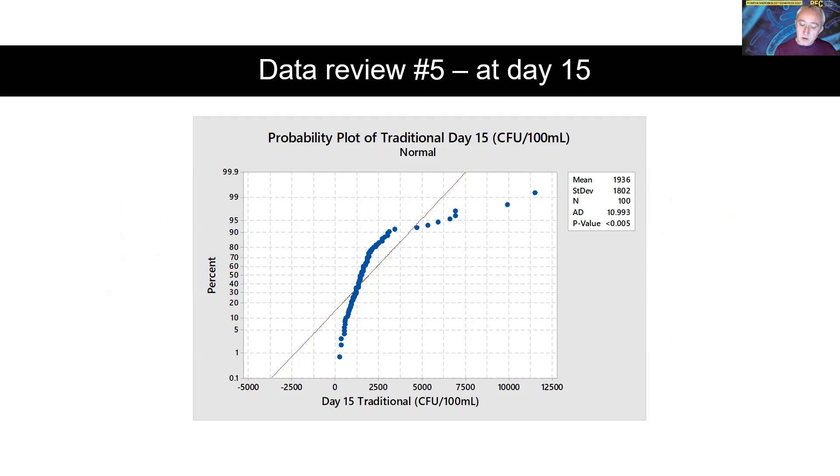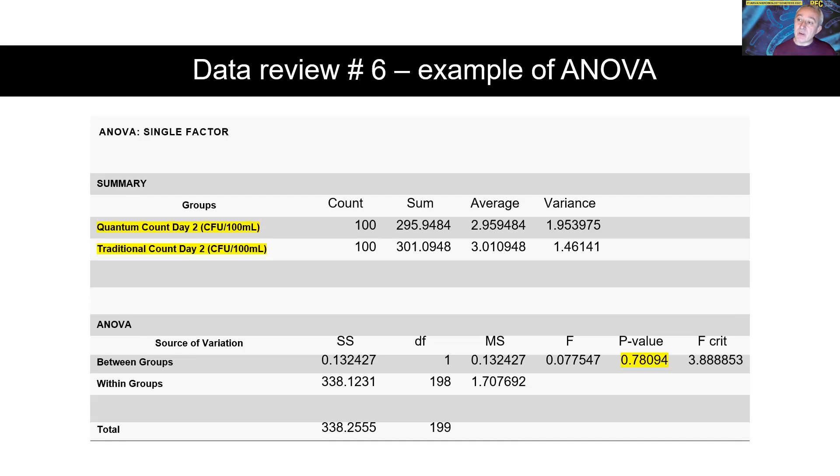What we need to do is transform the data. The method of transforming the data was by using logarithms. The data was transformed using log 10. This reduced skewness and gave an approximation of normal distribution, allowing the data to be subjected to the ANOVA. The ANOVA method selected was single-factor ANOVA. This looks at whether there's any statistical variation between the two counts, and whether we can support or disprove this null hypothesis that the two populations are broadly equal.